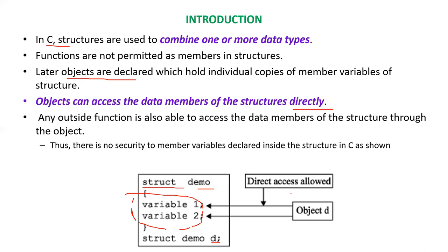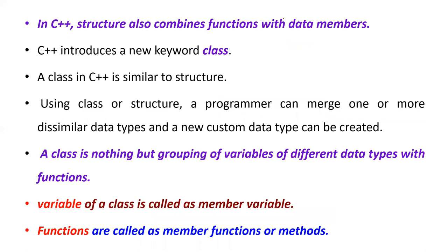Any member function, with the help of an object, can directly access these variables. So there is no security of these variables because their data are being declared publicly. In C++, this structure combines functions with data members. So C++ introduced a new concept — a new keyword called class.